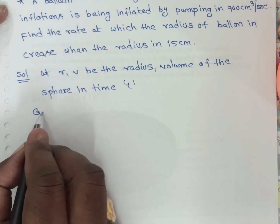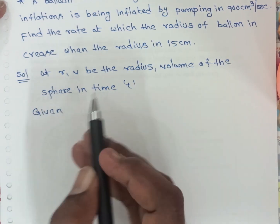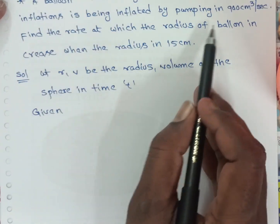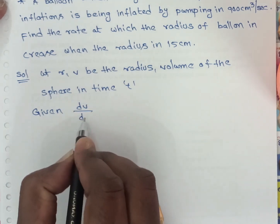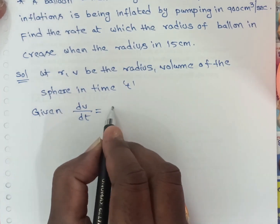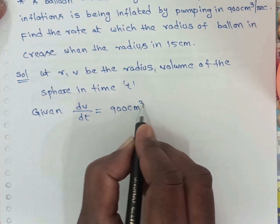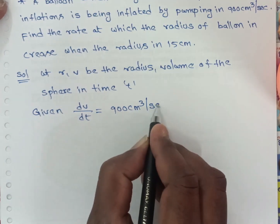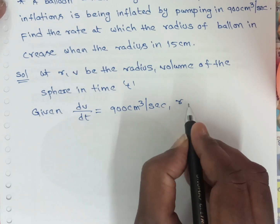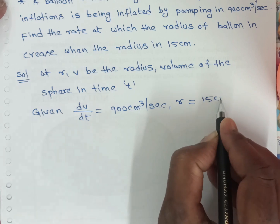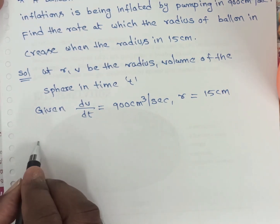Given values: the volume increasing rate, that is the rate at which air is being pumped, means DV by DT is equal to 900 cubic centimeters per second. And the radius value, that means R is equal to 15 centimeters.